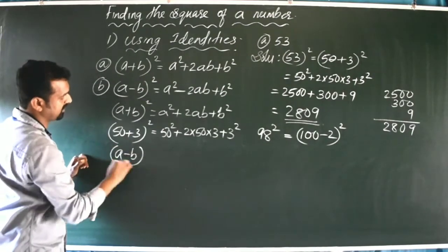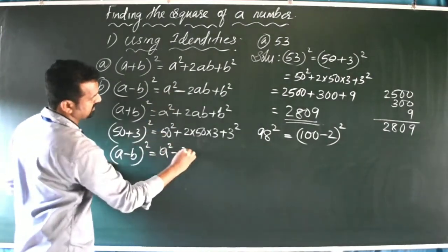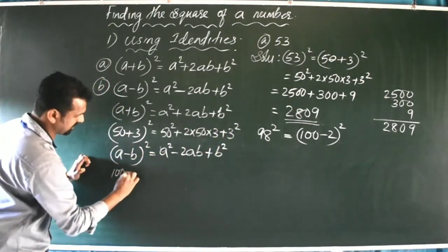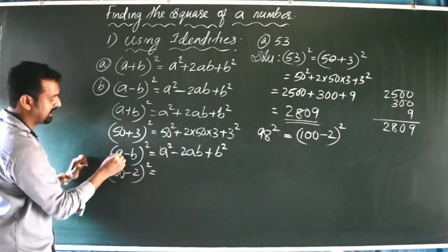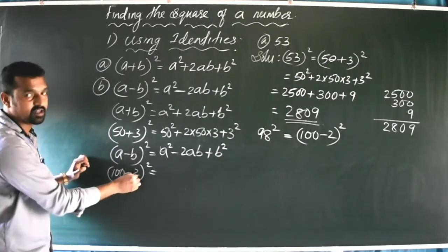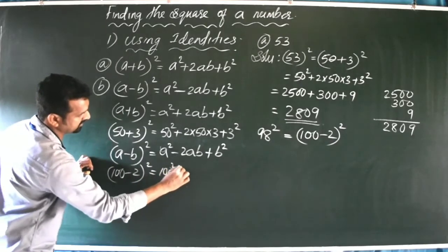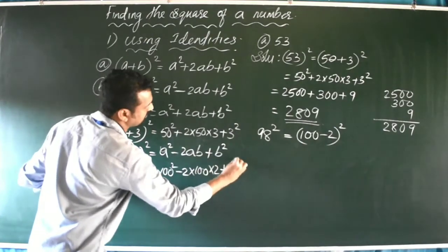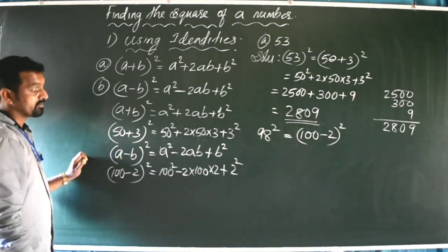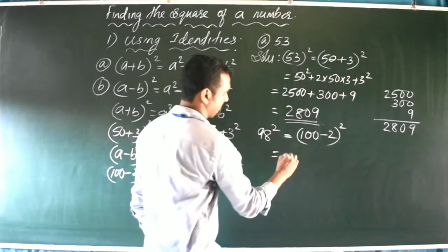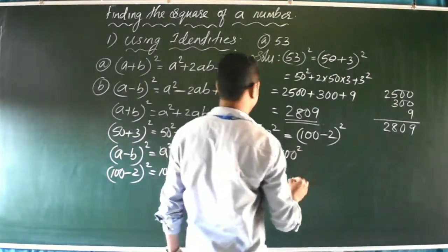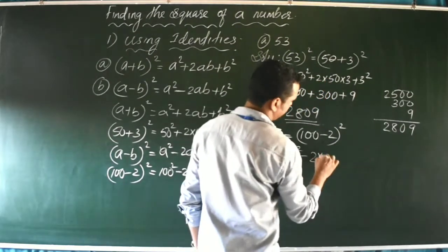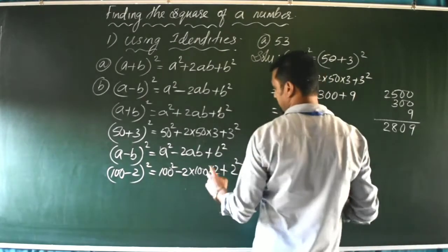Using the identity (a - b)² = a² - 2ab + b², with a = 100 and b = 2, we get: 100² - 2 × 100 × 2 + 2². That is 10,000 - 400 + 4.